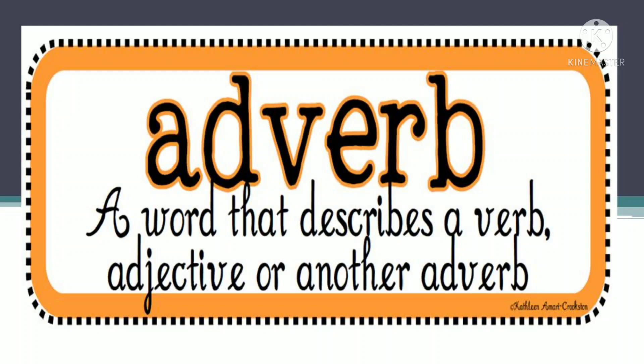Now I am giving a Hindi explanation as well. Adverb, yani ki kriyavisheshan, ek aisa shabd hota hai jo kisi bhi verb ke, kisi bhi adjective ke meaning ko, arth ko change kar deta hai, modify kar deta hai. For example: 'The old man walks slowly.' Toh yahaan par aapki jo verb hai, that is 'walks.' But how does the old man walk? Slowly. So 'slowly' is the adverb in the sentence.